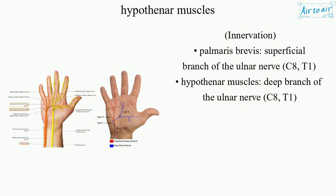Innervation: palmaris brevis is supplied by the superficial branch of the ulnar nerve, C8 and T1. The hypothenar muscles are supplied by the deep branch of the ulnar nerve, C8 and T1.